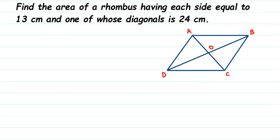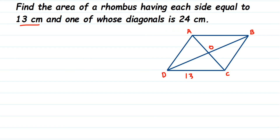Find the area of a rhombus having each side equal to 13 centimeters and one of whose diagonals is 24 centimeters. We are given two things: the side of the rhombus is 13 centimeters — and since all sides of a rhombus are equal, every side is 13 centimeters — and one diagonal is 24 centimeters.